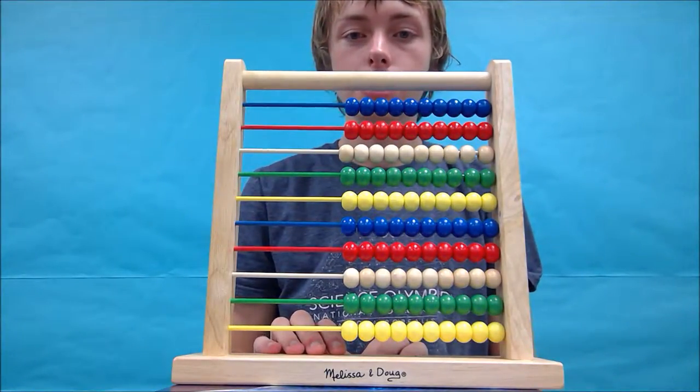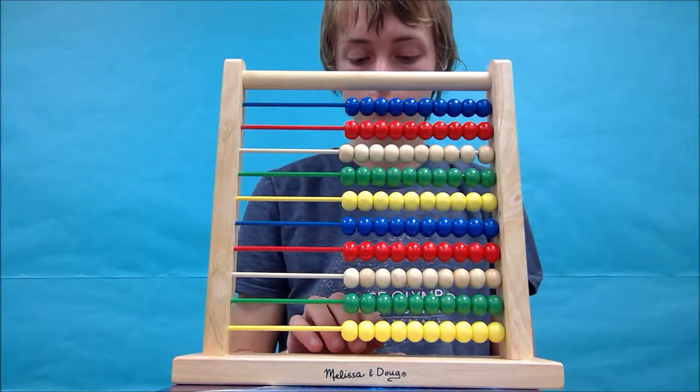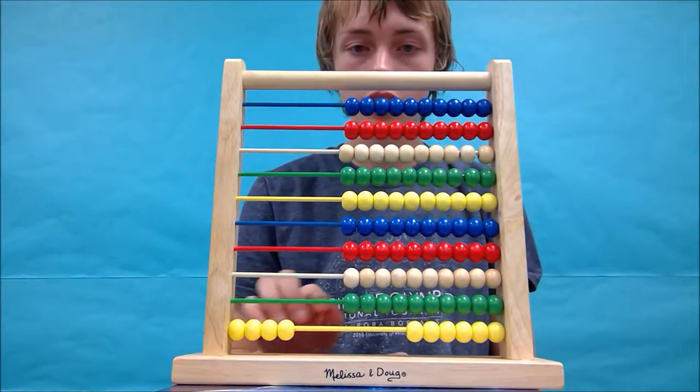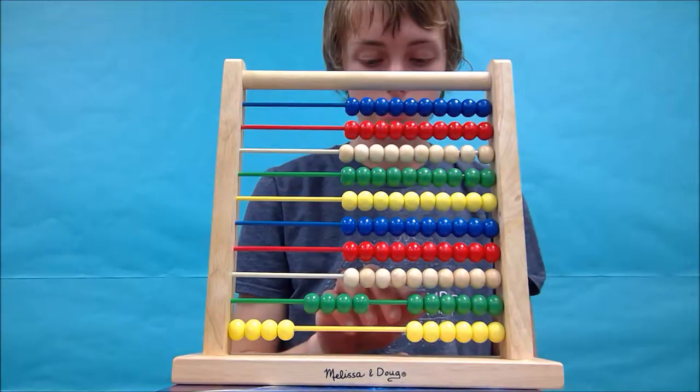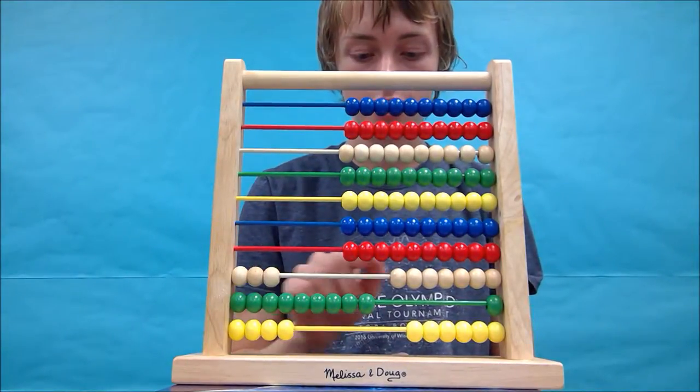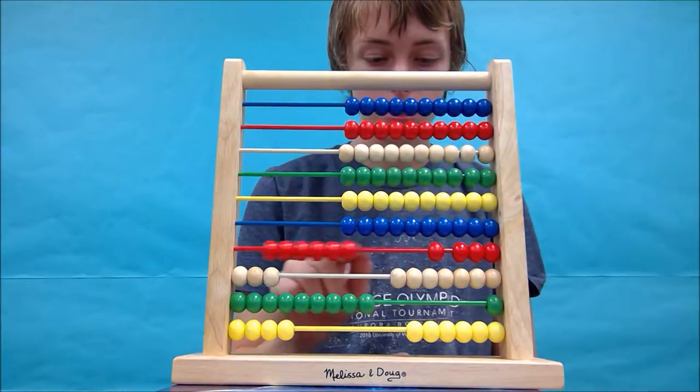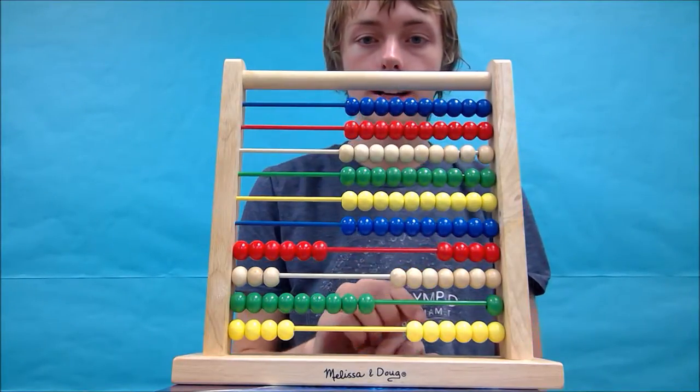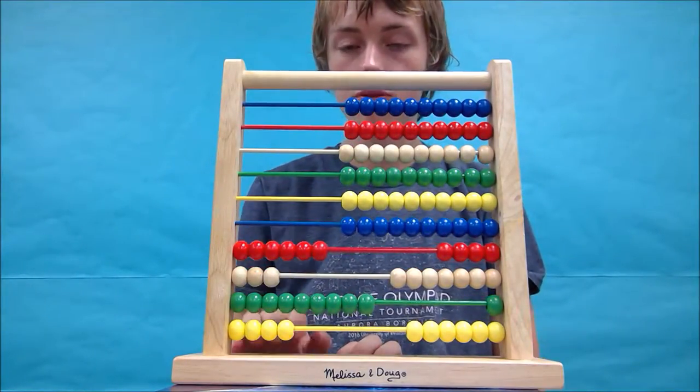Let's start. So the first number is 6,394. So 4, 9, 3, and 6. Alright, and now since we have our first number formed here, we're going to take away beads to form our answer.